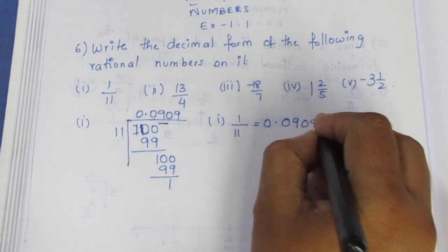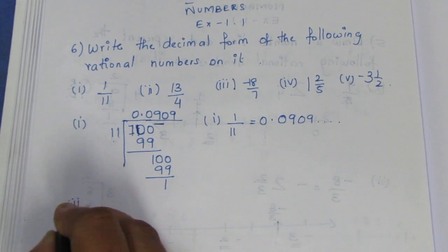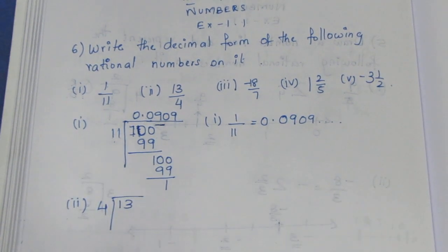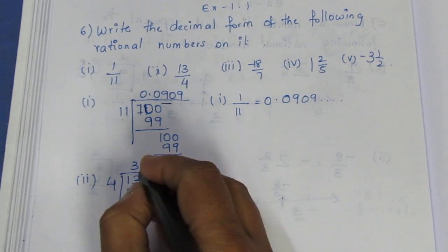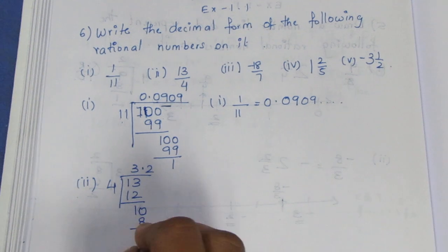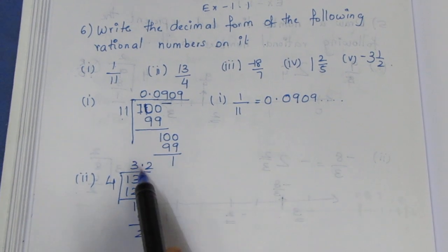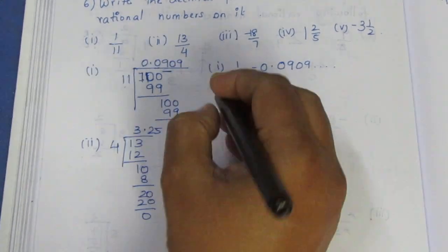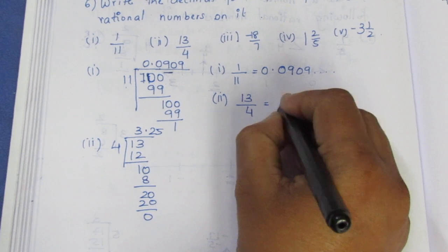Now we will find the second sum: 13 by 4. We will do ordinary division. 4 threes are 12, remainder 1. We place the decimal point and bring down 0. 4 twos are 8, remainder 2. Then 4 fives are 20, remainder 0. So the second answer is 13 divided by 4 equals 3.25.